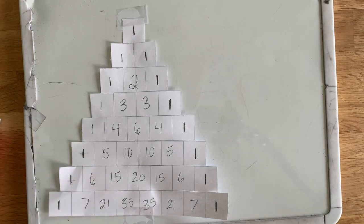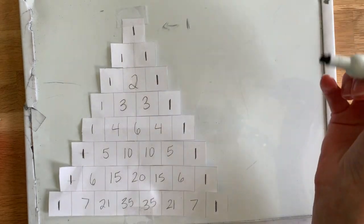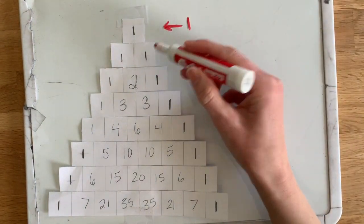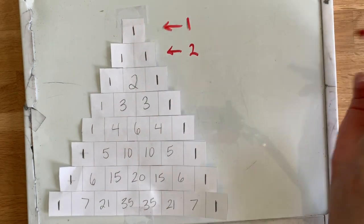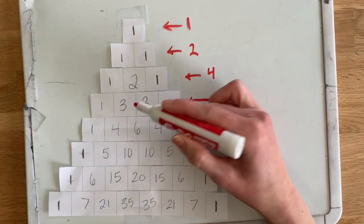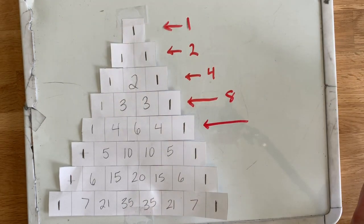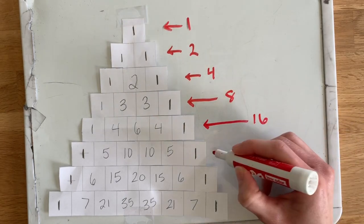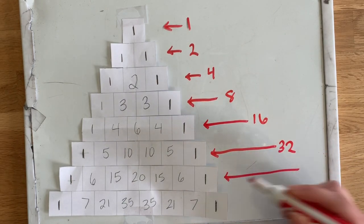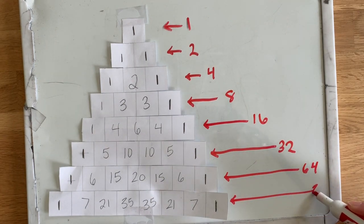There's also horizontal patterns. So here we have one. One plus one is two. One plus two plus one is four. One plus three plus three plus one is eight. The next one equals 16. This equals 16. This equals 32, 64, and 128.